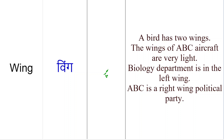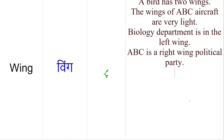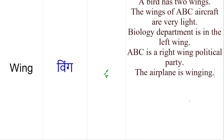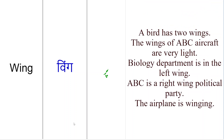Doostho, iske alawah wing ko hum verb ke taur pe bhi use kertai hain. Jis se main keh sakta hoon ke koi cheez jo paron pe urti hai toh usko wing kaha jayega. Jis tarah koi aircraft ur raha hai, airplane ur raha hai, toh hum kehenge: 'The airplane is winging' — airplane paron pe ur raha hai. Toh usko hum isi tarah bhi keh saktay hain: 'The airplane is winging.'